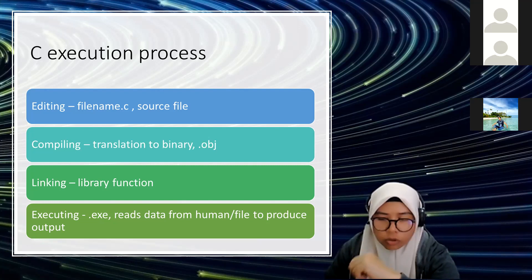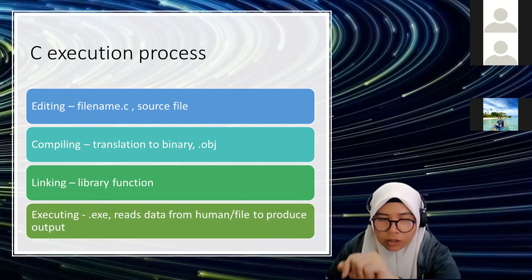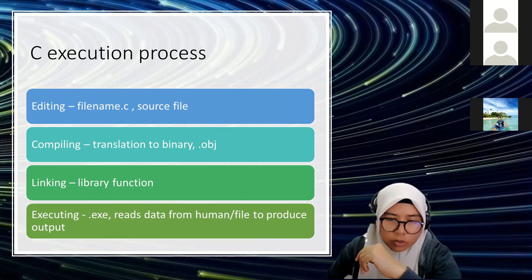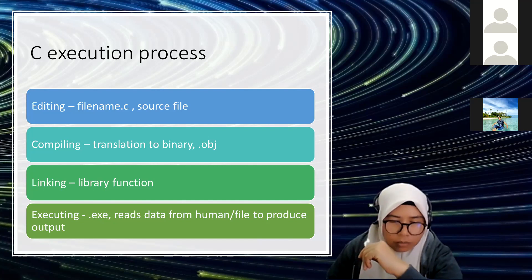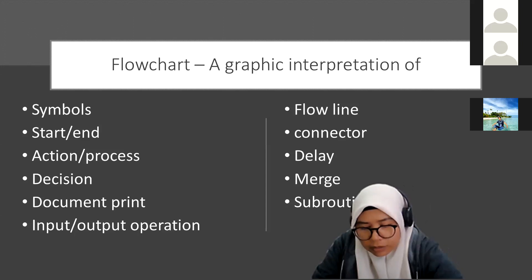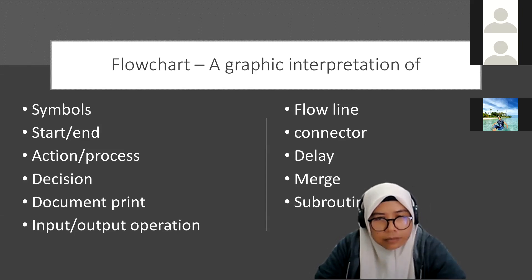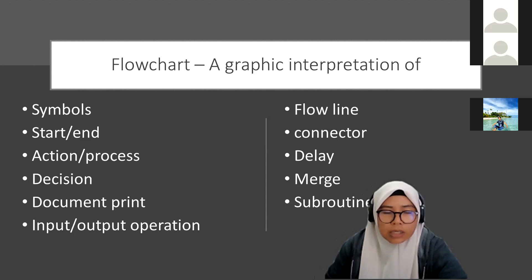Now, the important part: the flowchart. A flowchart is a graphical interpretation of your algorithm. It includes symbols for how to start and end, the action, the process, the decision, and so on. This is the list of graphical symbols. For example, the symbol that has a straight line with a semicircle at the end — that is the start and end symbol.